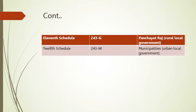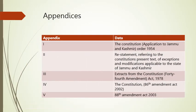The eleventh schedule explains the Panchayati Raj local government system and includes article 243. The twelfth schedule explains municipalities and urban local government and includes article 243W.